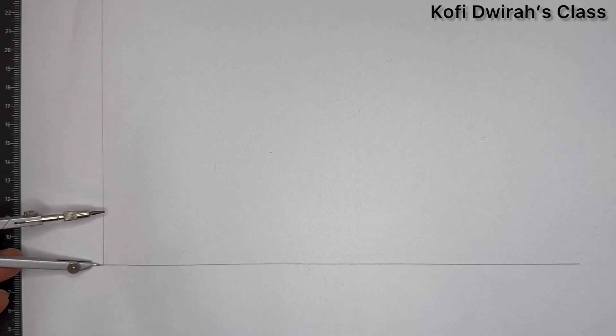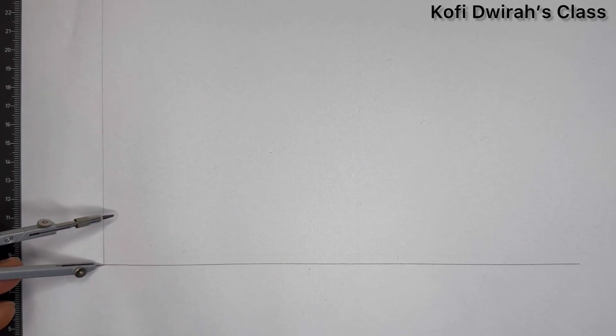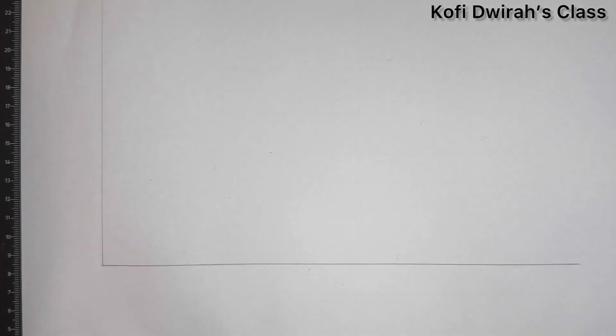Now we have this. The angle here is 90 degrees. Our given radius, or the arc, is 3 centimeters, which is 30 millimeters.